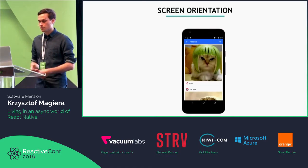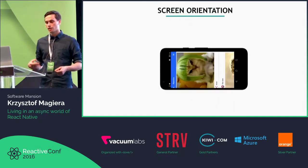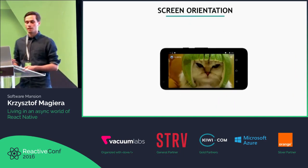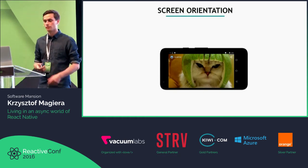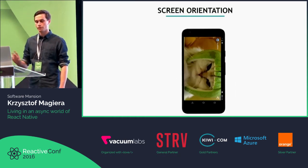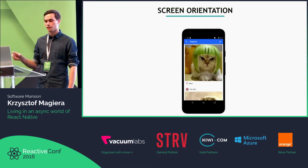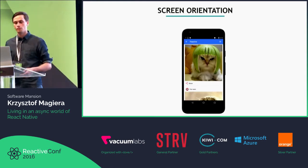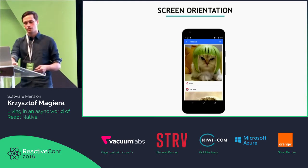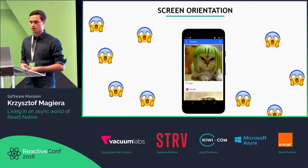I've prepared an example where I added extra computation to make it easier to notice. Whenever we flip, it actually flips first and re-layouts, and then there's a delay before we see what we want to see. This is undesirable behavior.